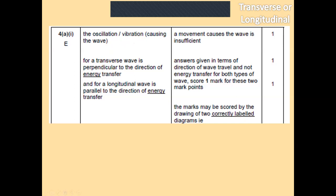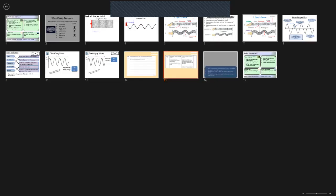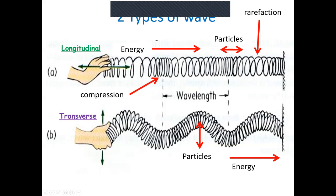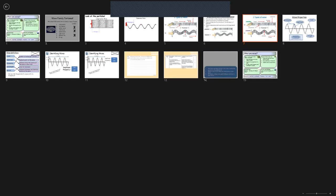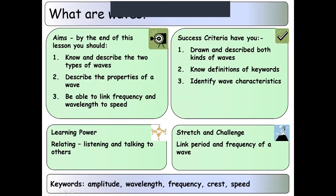Just remember: for a longitudinal wave, the particles are vibrating parallel to the direction of energy transfer — they're both along the x-axis. For a transverse wave, it's perpendicular to the direction of energy transfer. I hope that you have drawn and described both kinds of waves, you know the definitions of our keywords, and you can identify those characteristics.